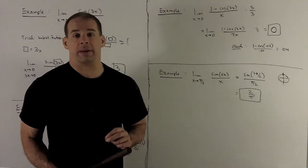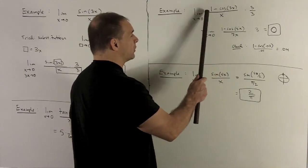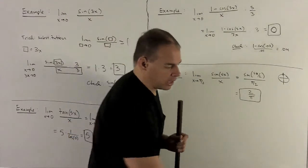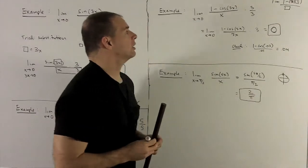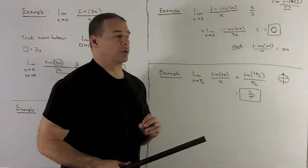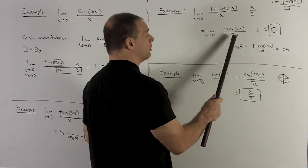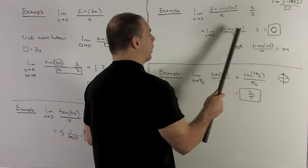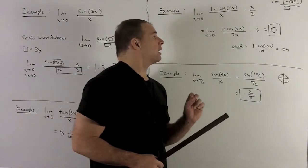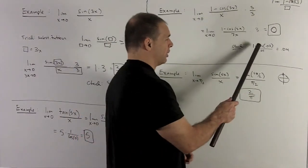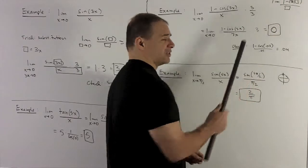Let's do one with the cosine limit. Same idea — you need it looking like (1 − cos(box))/box with box going to 0. Multiply by 3/3 to turn the bottom into 3x. As 3x goes to 0, the whole expression (1 − cos(3x))/(3x) goes to 0, leaving a factor of 3 out front. So the limit is 3 × 0 = 0. As a numerical check, (1 − cos(0.03))/0.01 ≈ 0.04, which is close enough to 0 to confirm the answer.